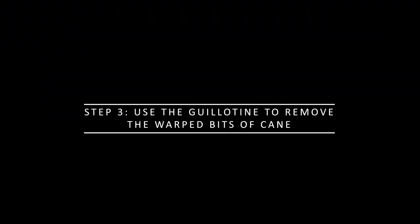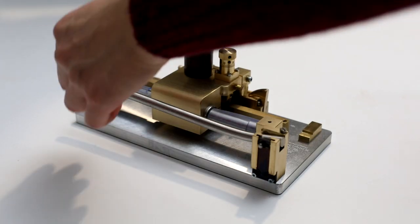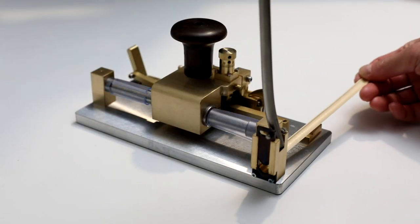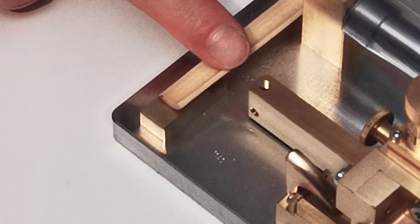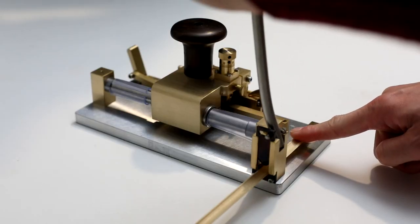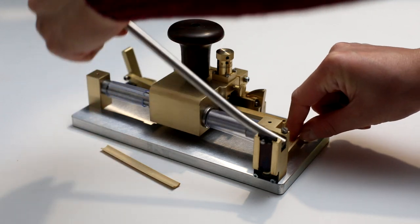Next, step 3 is to use the guillotine to remove the warped bits of cane. Slide the piece of cane in through the guillotine until the end of it rests against the small shelf at the side. Then bring the guillotine down to cut off the unwanted part of the cane.